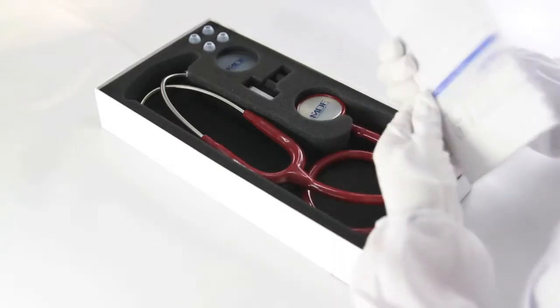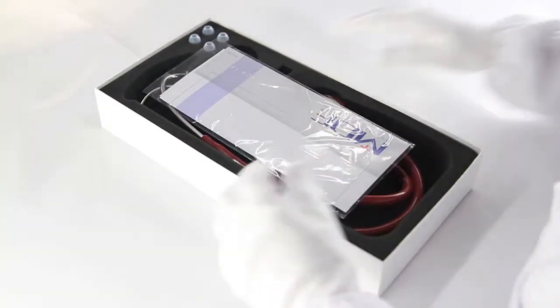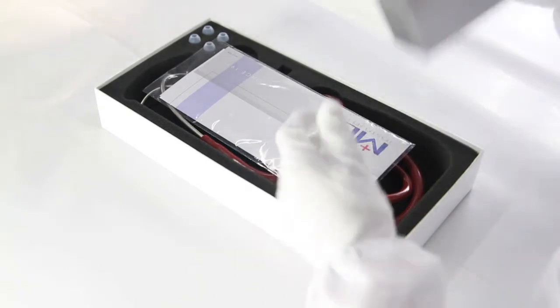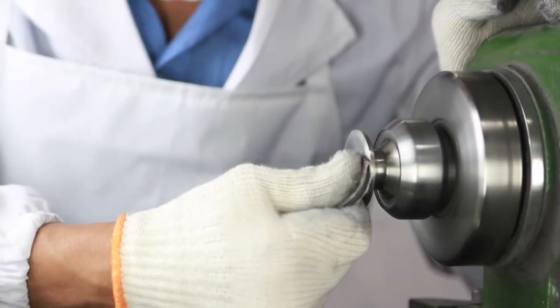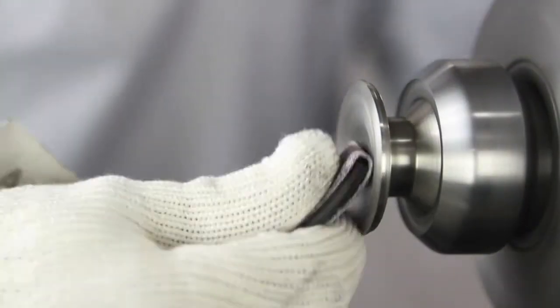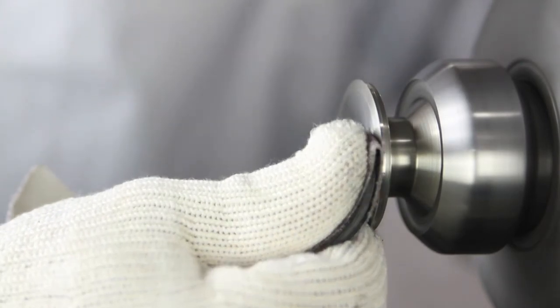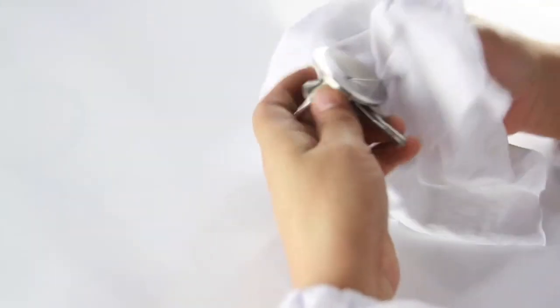Like all of our stethoscopes, the Pulse Time is covered by a full lifetime warranty even on the tubing and it has our clear silicone ear tips and those are covered by our free parts for life program. So anytime you need ear tips or an ID tag or a diaphragm, it's free. We're able to offer industry-leading warranties because all of our products are handcrafted for the best possible quality and that's what we've been doing since 1971.